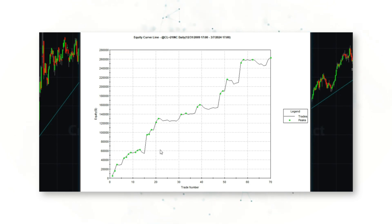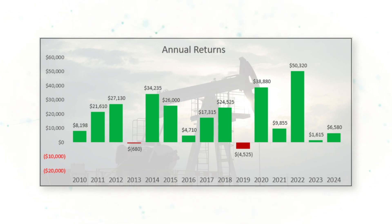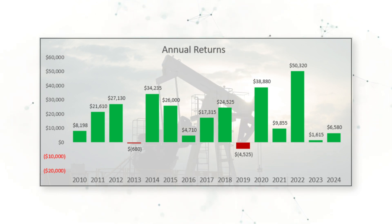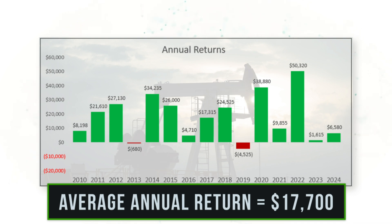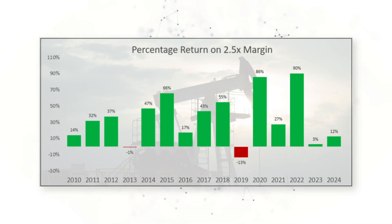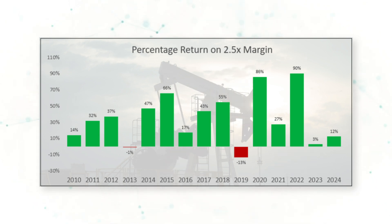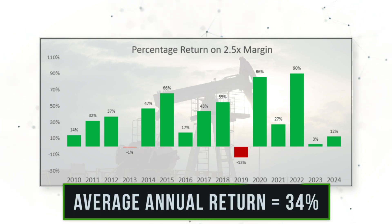This is a really nice, consistent trading approach for the crude oil market that attempts to catch those big swings in crude oil futures. Looking at annual returns, this system has generated positive profits in 12 of the past 14 full years and is off to a good start in 2024, with an average return of $17,700 per year. In percentage terms using 2.5 times margin, the average annual return is 34%.